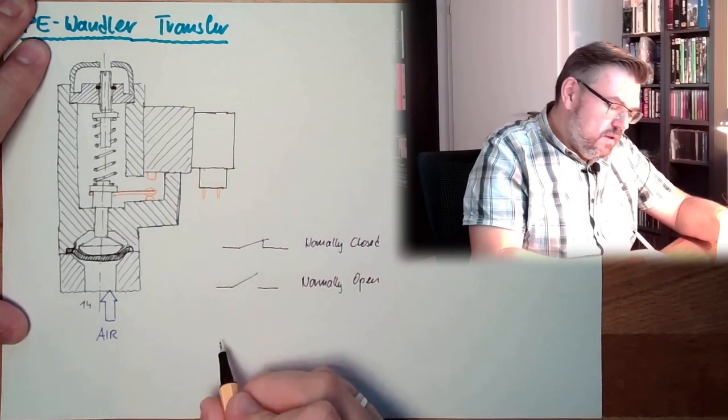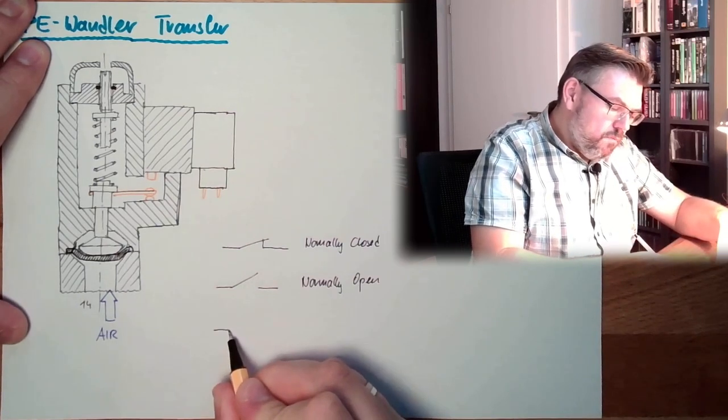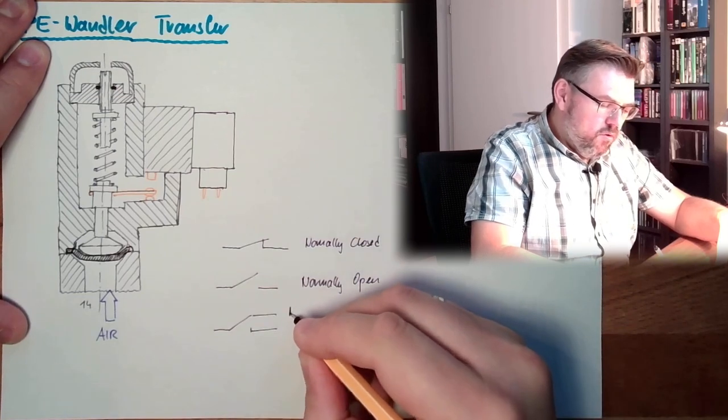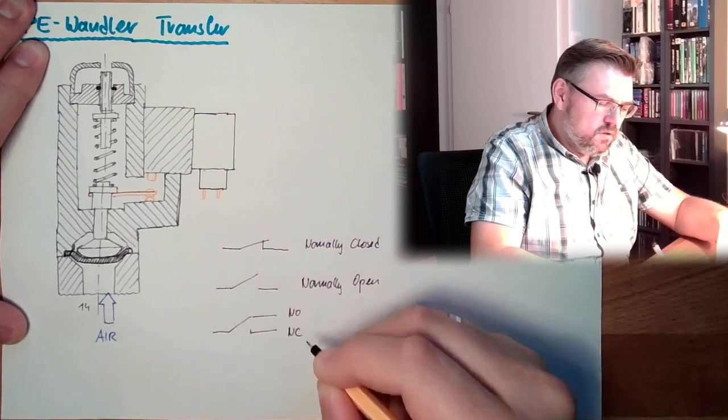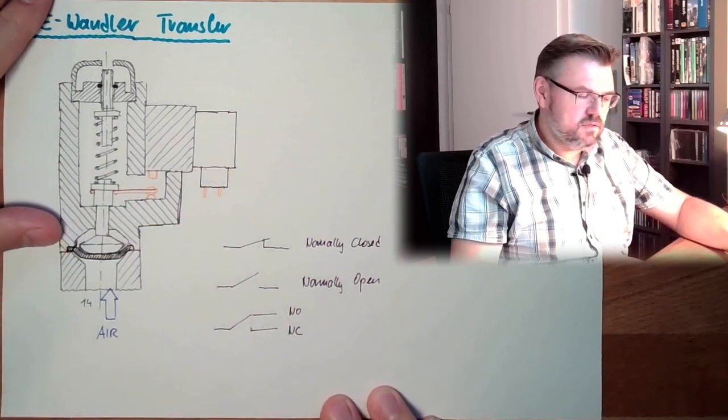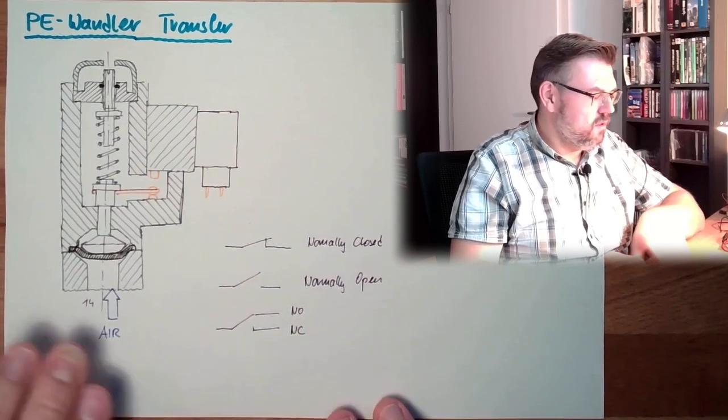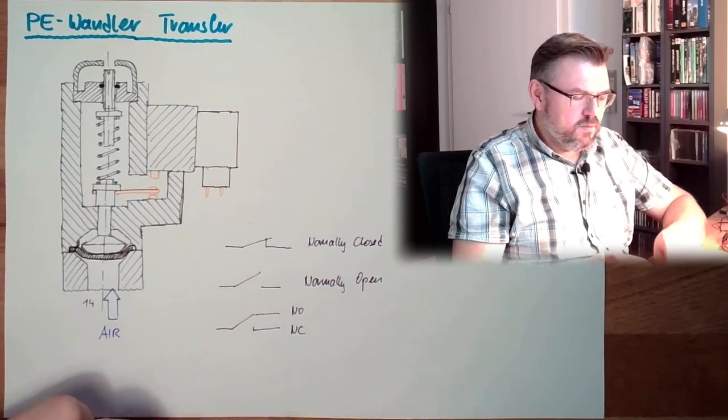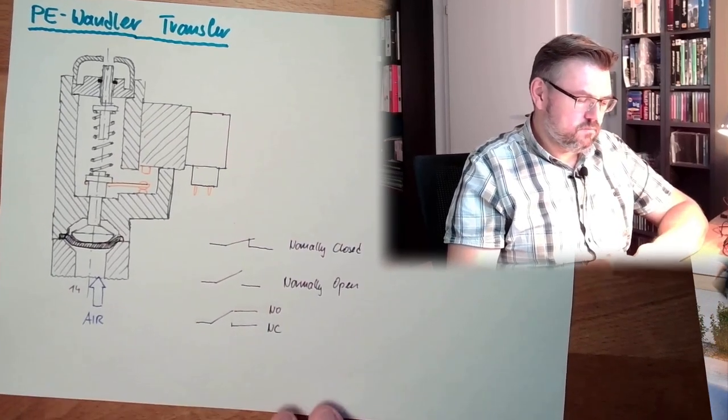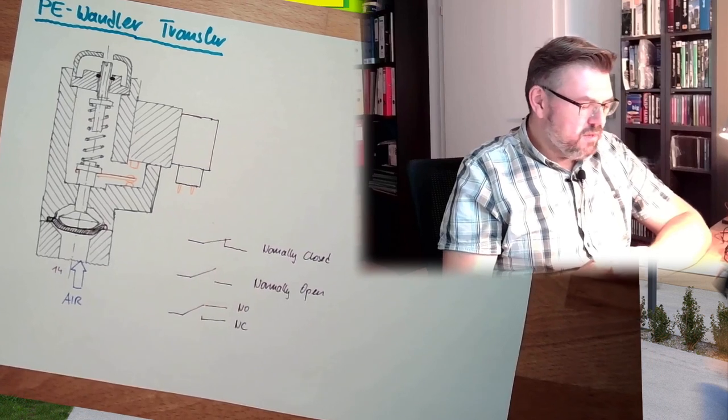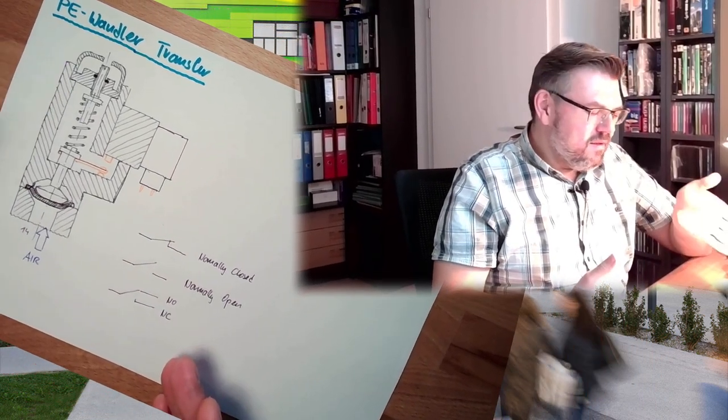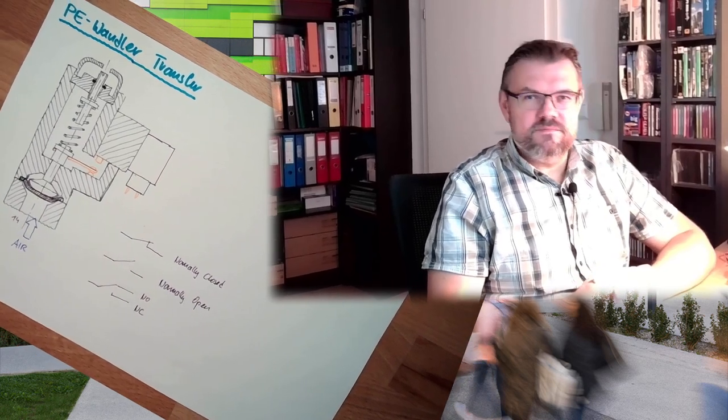Or it can even be both. So that we have two contacts, a normally open, and a normally closed contact, and the middle contact. So that I can select, simply by which wire I'm using. This is also often. In German, this is called Wechsel, Wechselkontakt. This might be possible. So we can adapt the switch to our needs, okay?